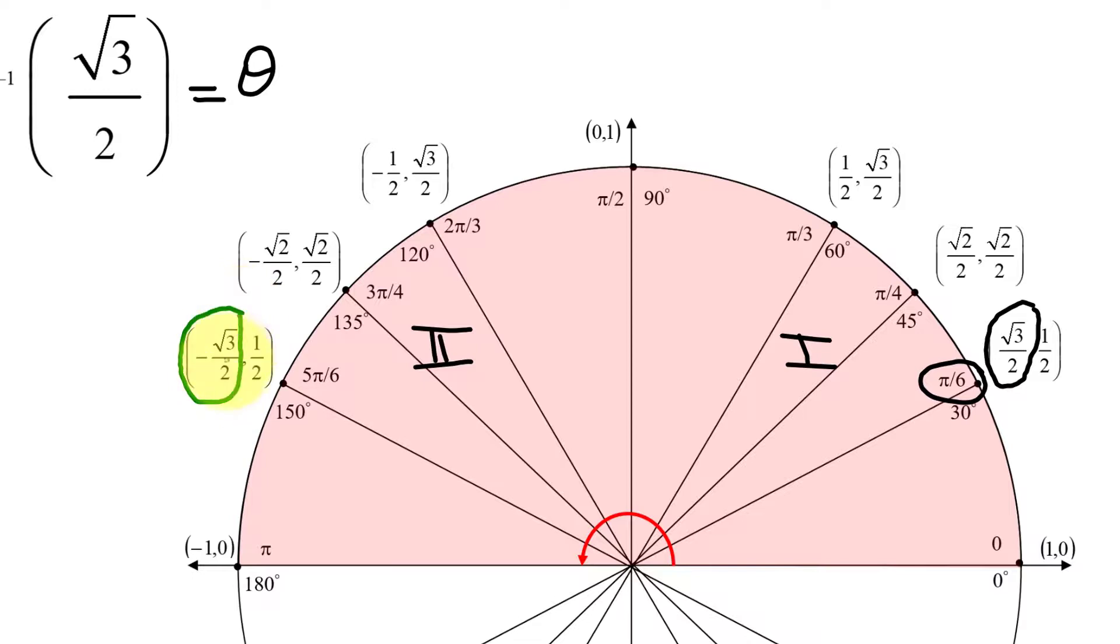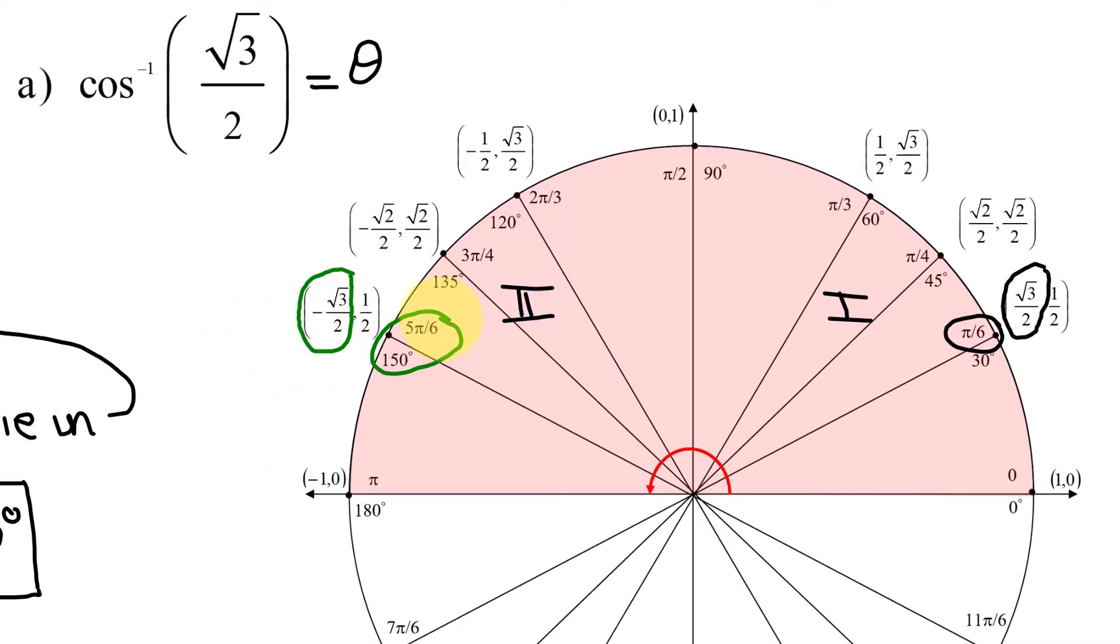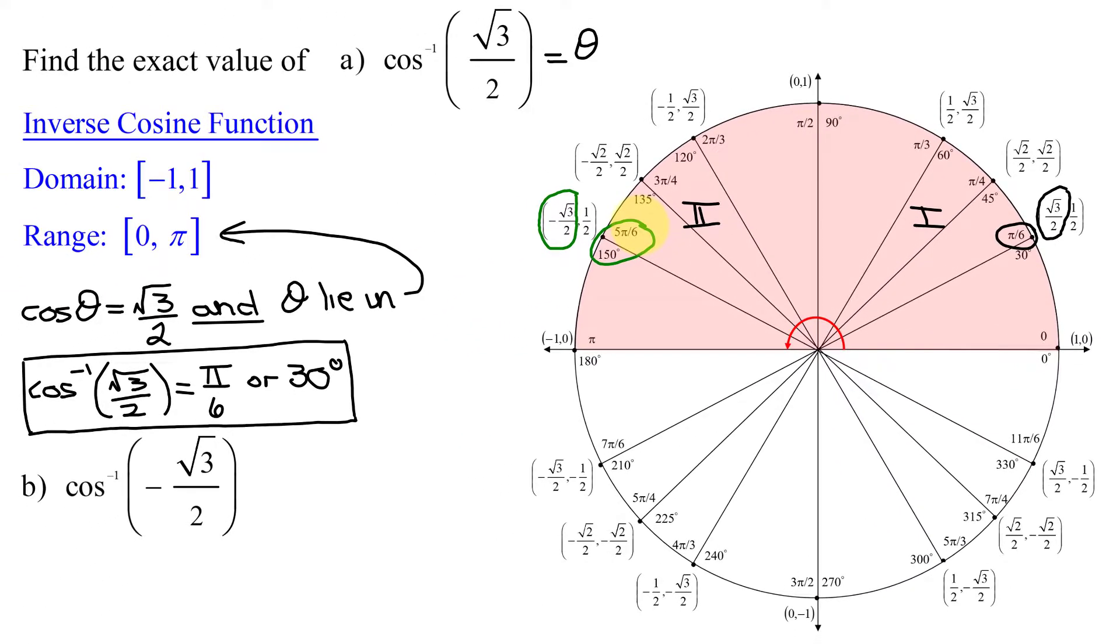whose cosine value, or x-value, is negative the square root of 3 over 2. This is the angle that produces it.